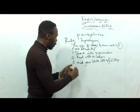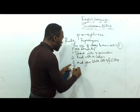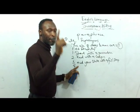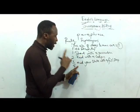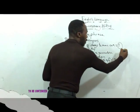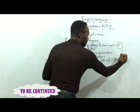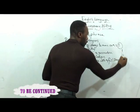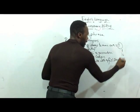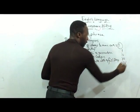The fourth rule: you must number your work in Roman figures. Summary answers are numbered one, two, three, four in Roman numerals.